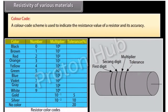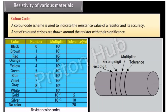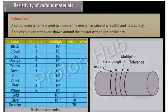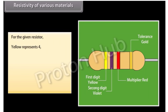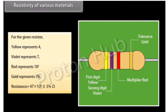A color code scheme is used to indicate the resistance value of a resistor and its accuracy. A set of colored stripes are drawn around the resistor with their significance. For the given resistor, yellow represents 4, violet represents 7, red represents 10 raised to the power 2, and gold represents 5% tolerance. Total resistance is 47 × 10² ohm with 5% tolerance.